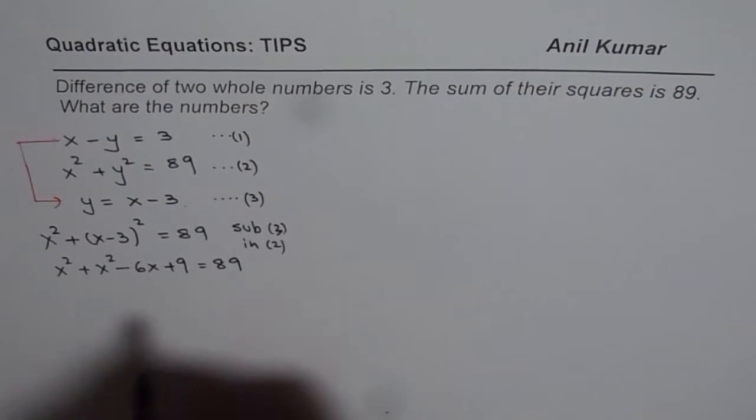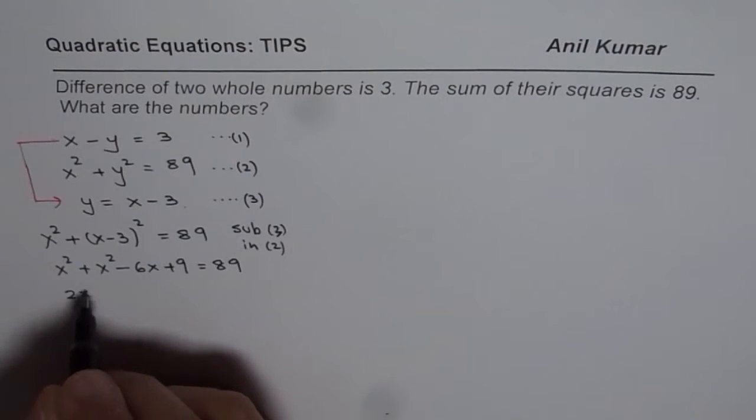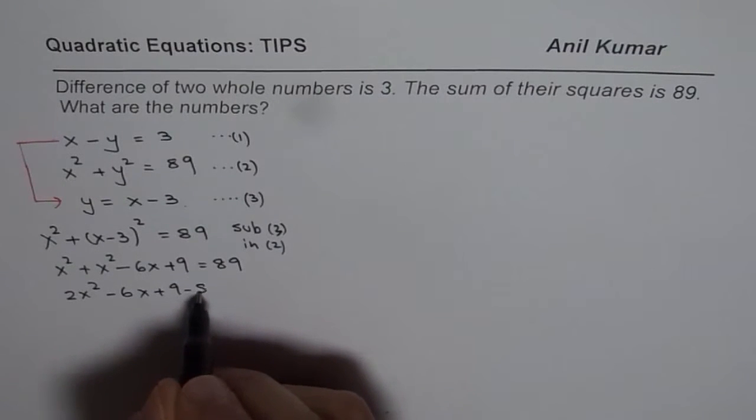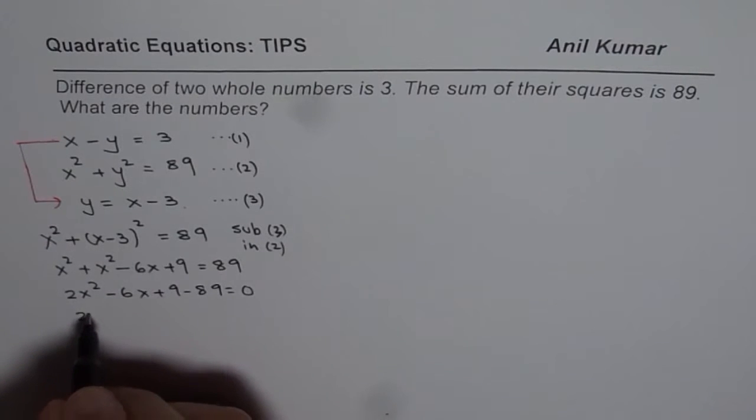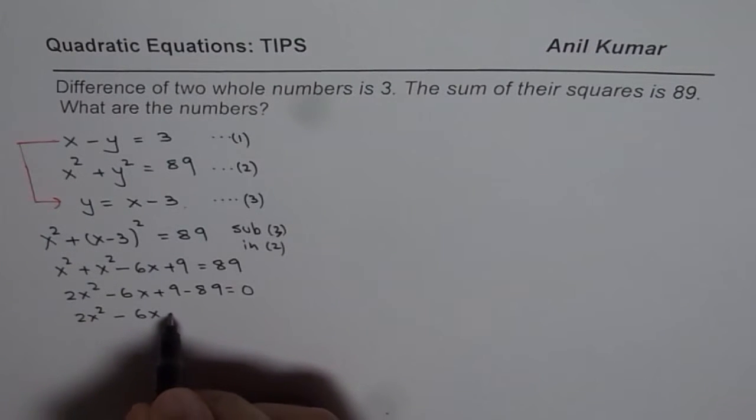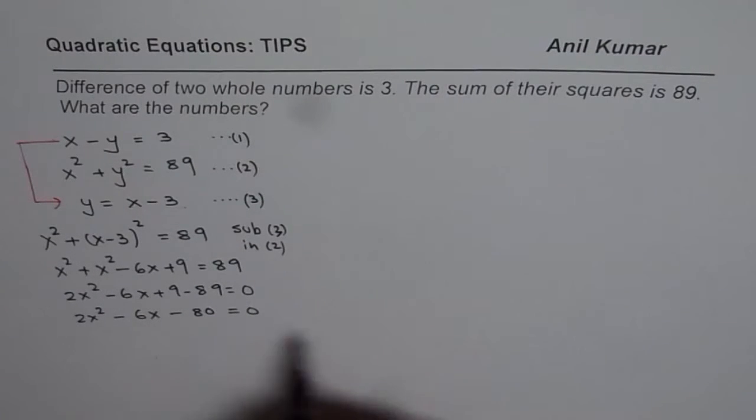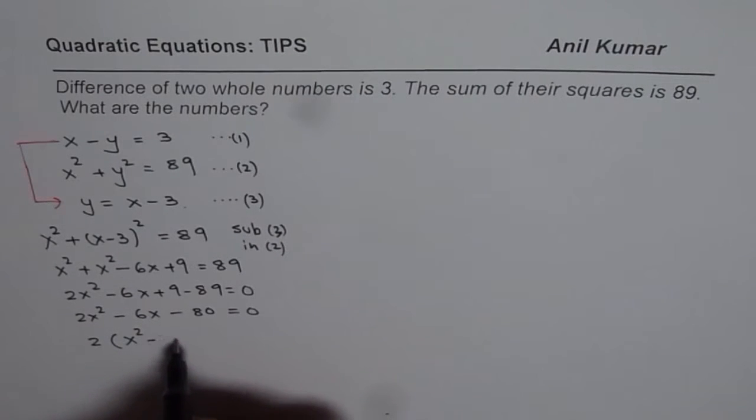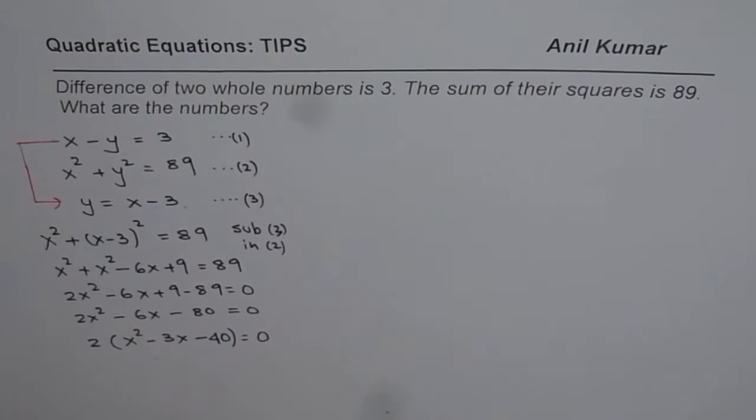Now we can bring all the terms together. We have 2x square minus 6x plus 9 minus 89 equals 0. That gives us 2x square minus 6x minus 80 equals 0. We can factor this equation. 2 is common. So we can say 2 times x square minus 3x minus 40 equals 0.